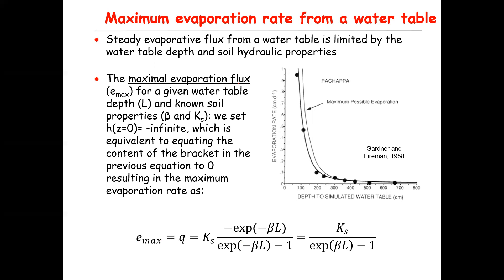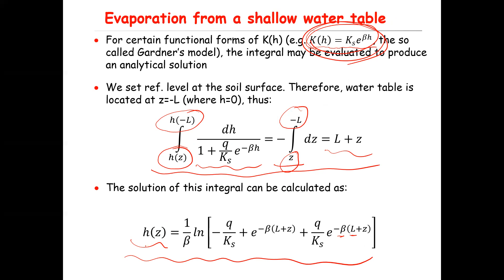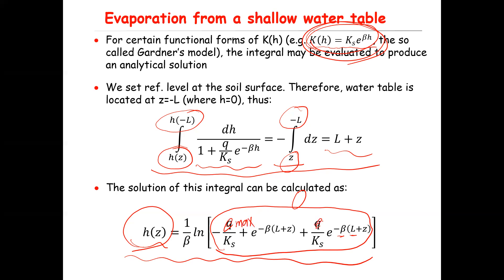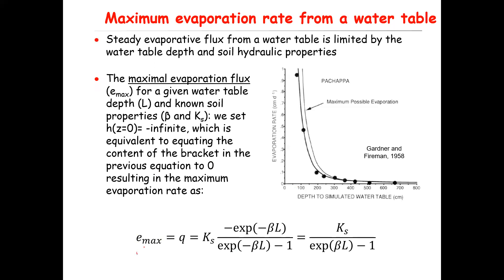Under that condition, Q equals Emax. Setting z equal to zero and the bracket expression equal to zero, and replacing Q with Emax, you can solve for Emax as a function of the remaining parameters. This gives Emax equal to Ks divided by (e to the power of beta·L minus one). As L increases—in other words, as the depth of the water table increases—the maximum evaporation rate decreases.